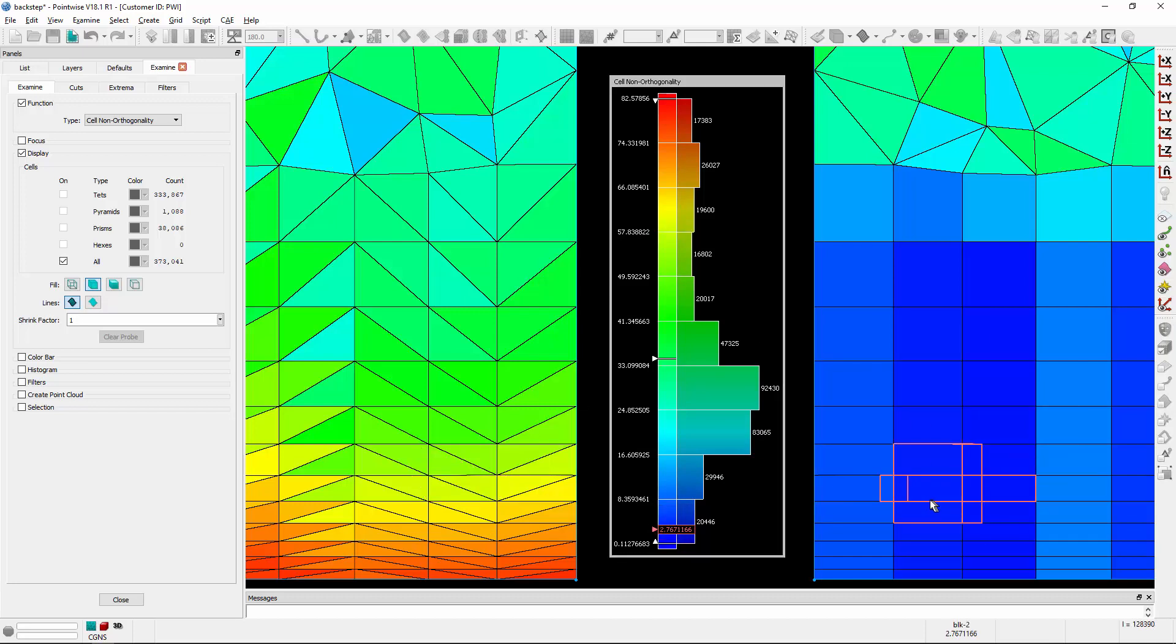and we're examining cell non-orthogonality, where red values are higher values of cell non-orthogonality, and blue are lower values. And what you can clearly see is that the right-angle tetrahedra have a much higher non-orthogonality value than the combined prism elements.